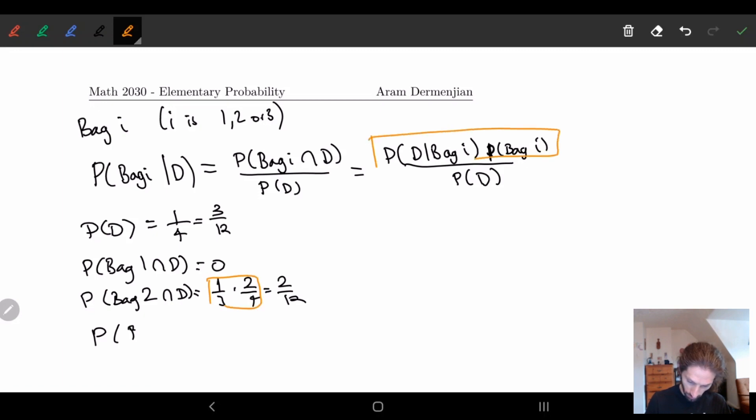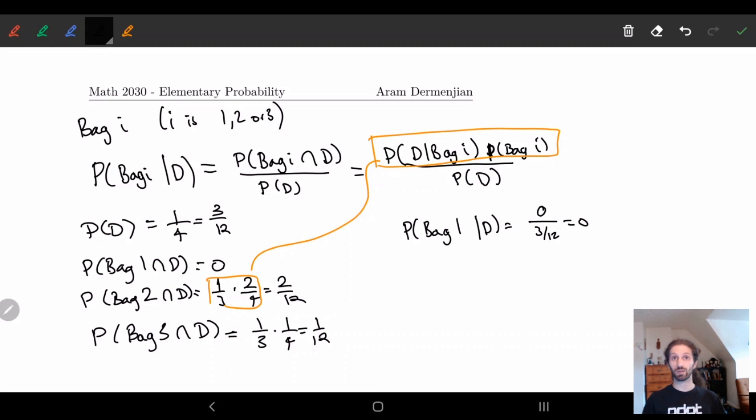The probability for bag three with D was similar. It was one third times one fourth is equal to one twelfth. So in other words we can calculate these things. The probability of bag one given dark chocolate is zero over three twelfths which is just zero. There's no chance it came out of the first bag, which is expected. There's no dark chocolate in the first bag.